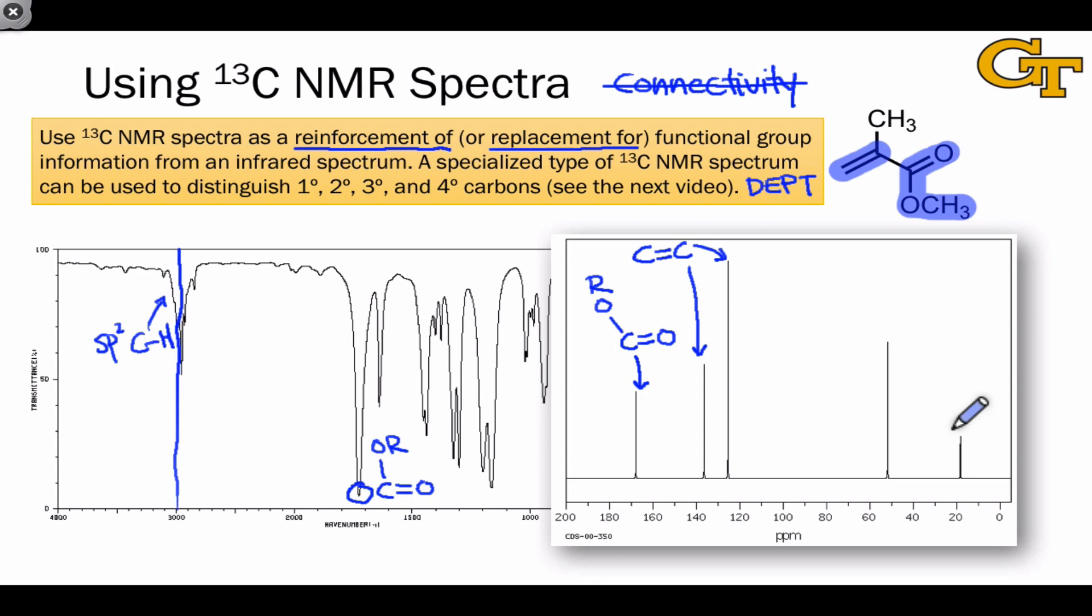Although the carbon-13 NMR spectrum may seem somewhat redundant with the IR spectrum, I would encourage you not to discount it. One advantage of the carbon-13 NMR spectrum is that it has no fingerprint region. The entire range of the spectrum is useful to interpret. And so, visually, in my personal opinion, this makes it a little bit easier to work with than the infrared spectrum.